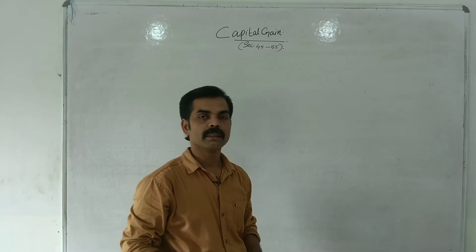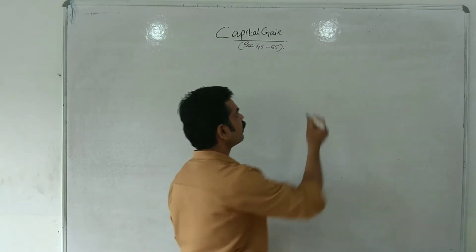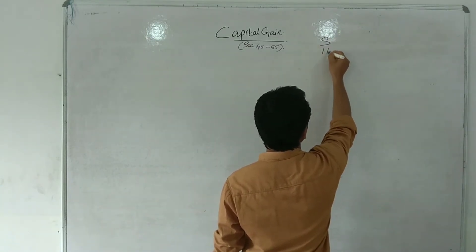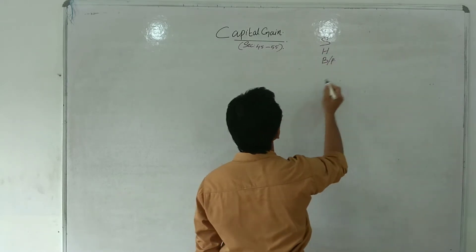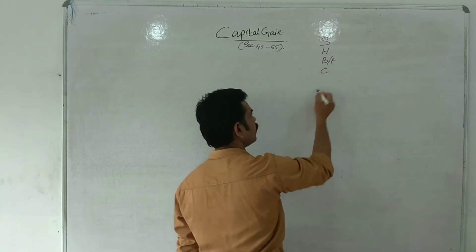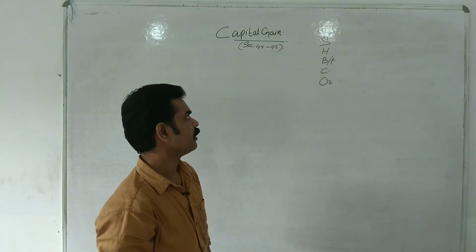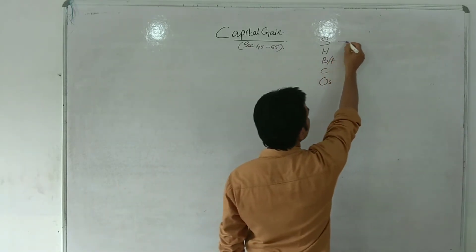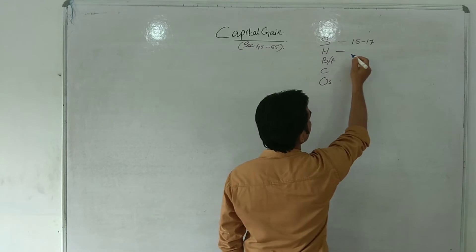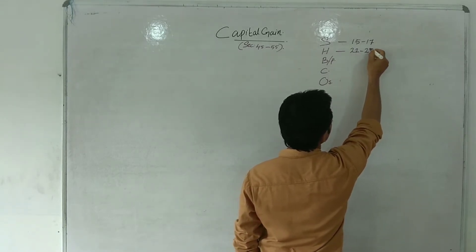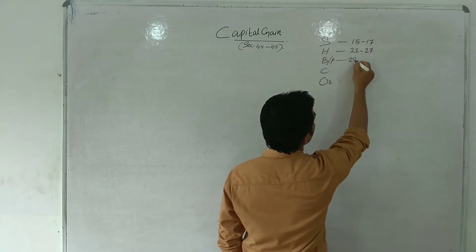Capital Gain is one head of income. There are five heads of income: salary (Sections 15-17), house property (Sections 22-27), business or profession (Sections 28-44), capital gain, and other sources.